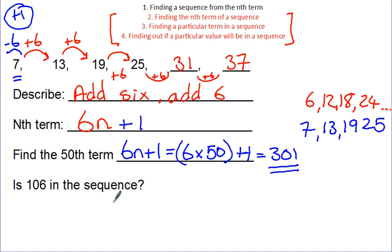The next one is, is 106 in the sequence? This is quite a hard question. It doesn't come up every year, but it has come up in the past. And so, you should know how to do it. To be able to do this question, you need to be able to solve equations. Because what we're going to—the way you want to think about it is, well, if 106 is in the sequence, then it's going to equal the nth term. So, 6n plus 1 must equal 106 at some point, so for some value of n for one term, if it is in the sequence.